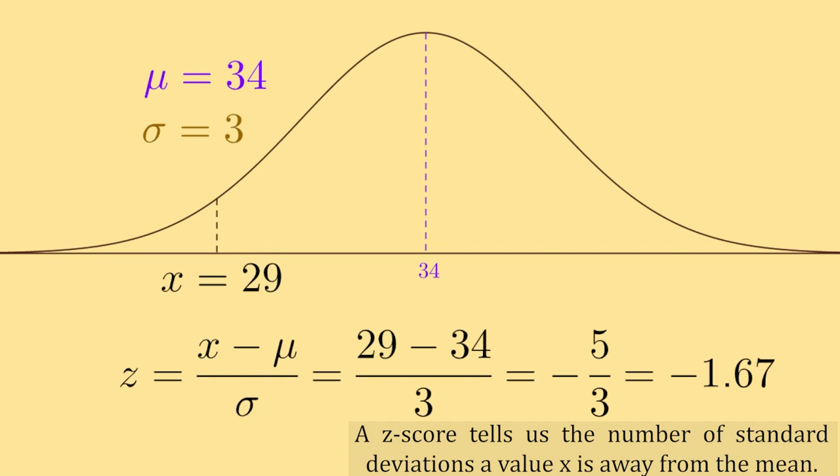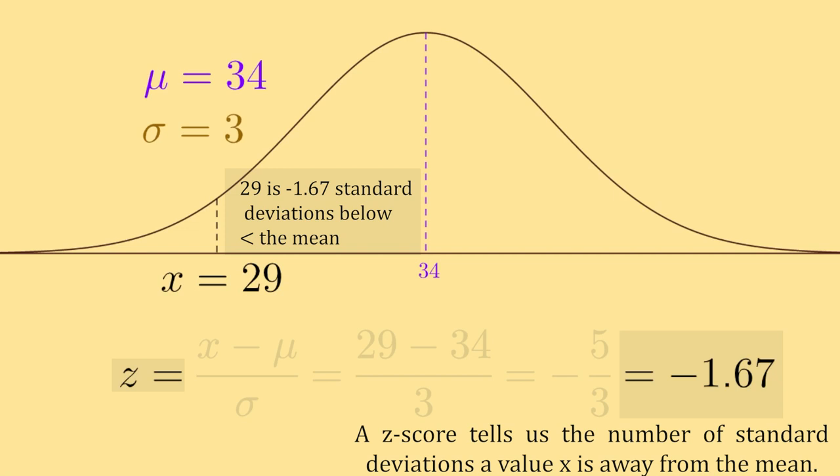Also, the z-score itself is a measurement of how many standard deviations a point x is for any normal distribution away from its mean. Just plug the x value of interest, the mean, and the standard deviation into the z-score formula, and then the output or the z-value we get tells you how many standard deviations x is away from the mean within that normal curve.